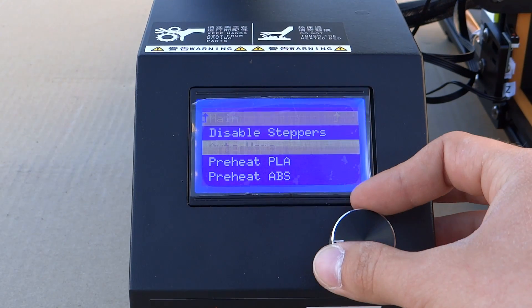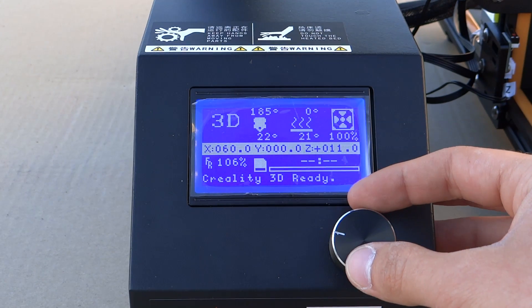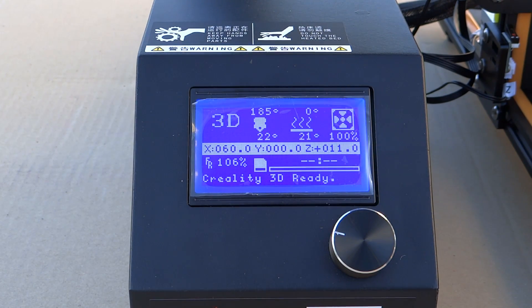We can heat up the head and bed of our printer to calibrate it. When it is ready, we can auto-home all axes.